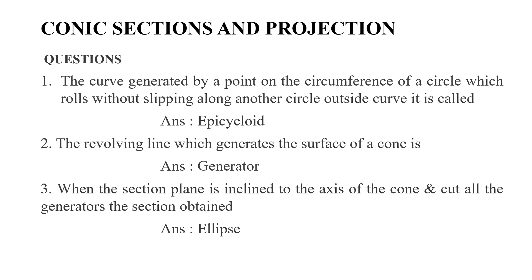Review question: A circle generated by a point on the circumference of a circle which rolls without slipping along another circle outside is called an epicycloid. The revolving line which generates the surface of a cone is called a generator. When the section plane is inclined to the axis of the cone and cuts all the generators, the section obtained is an ellipse.